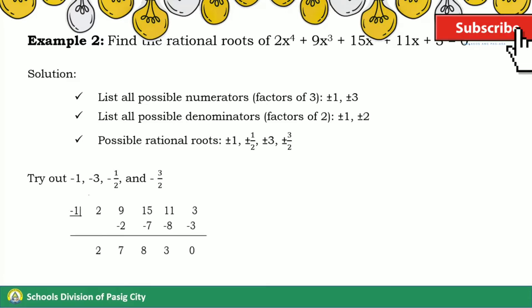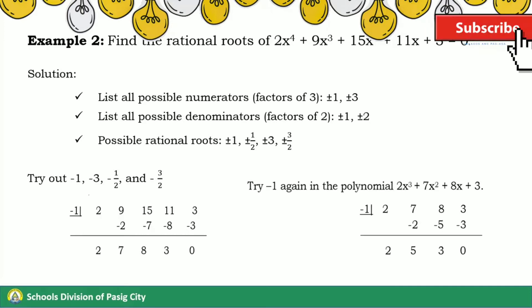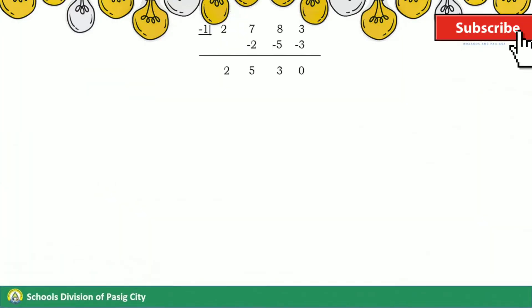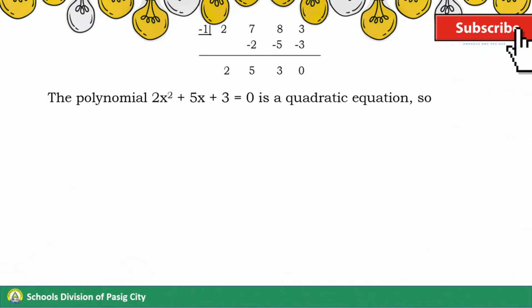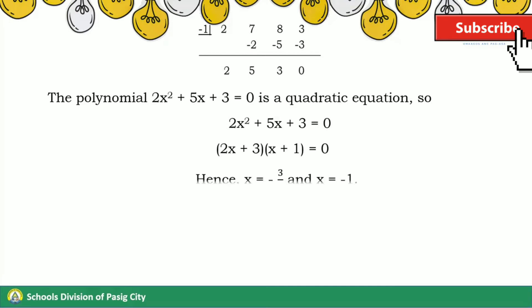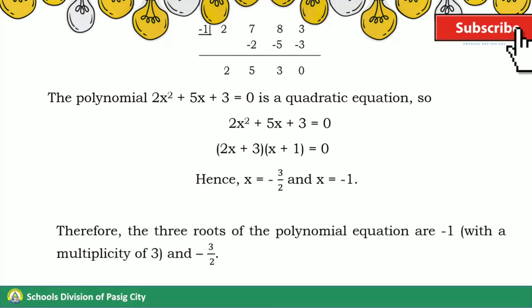Using −1, we can see that the remainder is equal to 0. Therefore, −1 is a root of the polynomial. Trying −1 again in the depressed polynomial, the remainder is again 0, so −1 is again a root. The depressed equation 2x² + 5x + 3 = 0 is a quadratic equation and can be factored using other techniques. Applying the zero product property, we have x = −3/2 and x = −1. Therefore, the roots of the polynomial equation are −1 with a multiplicity of 3 and −3/2.